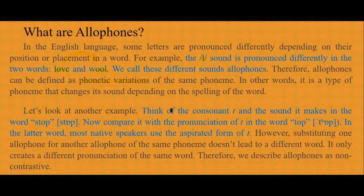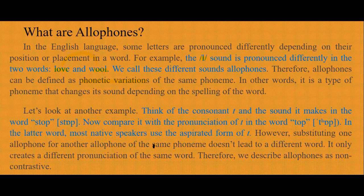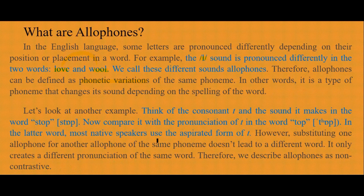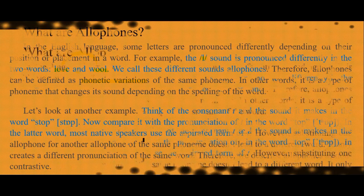Let's look at another example. Think of the consonant T and the sound it makes in the word 'stop.' Now compare it with the pronunciation of T in the word 'top.' In 'top,' most native speakers use the aspirated form of T. However, substituting one allophone for another allophone of the same phoneme doesn't lead to a different word — it only creates a different pronunciation of the same word. Therefore, we describe allophones as non-contrastive.